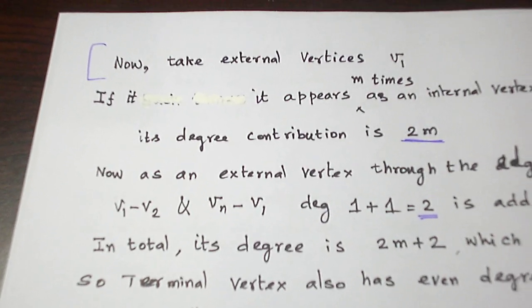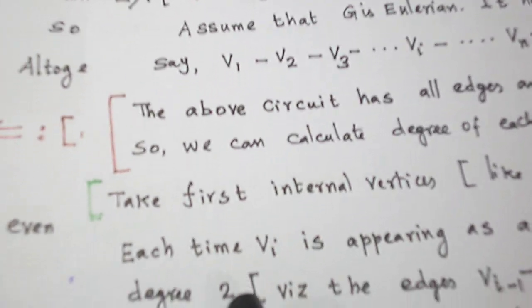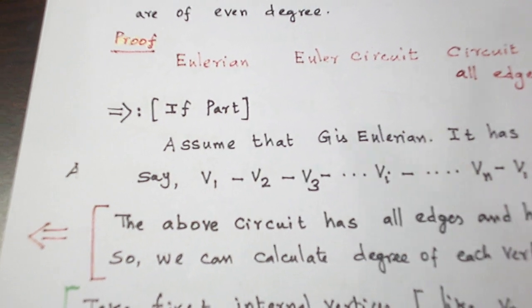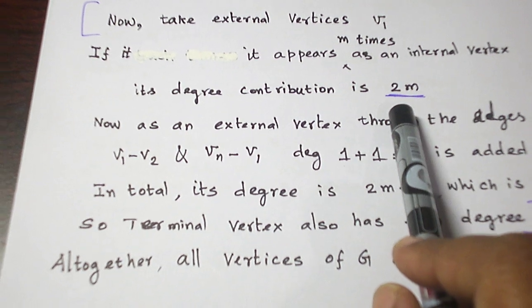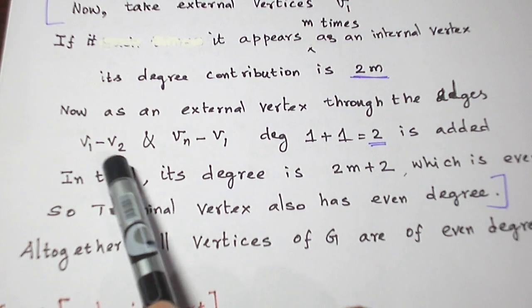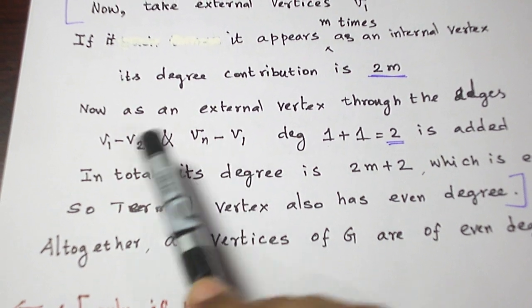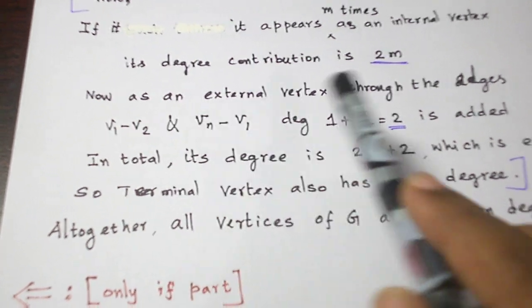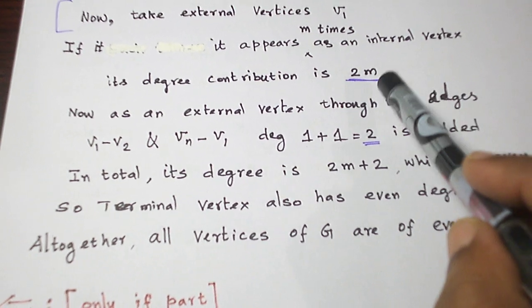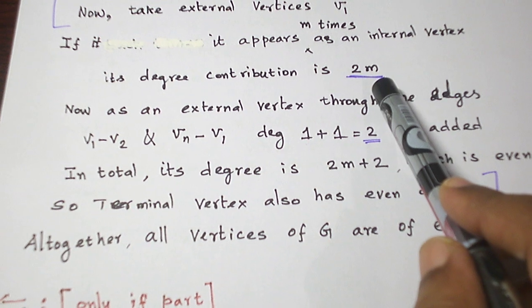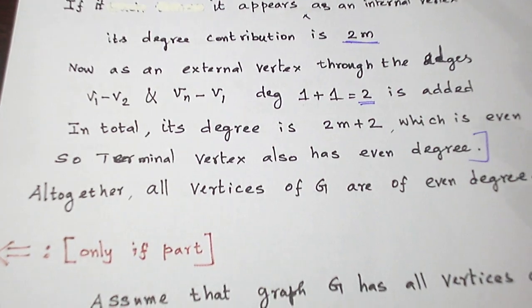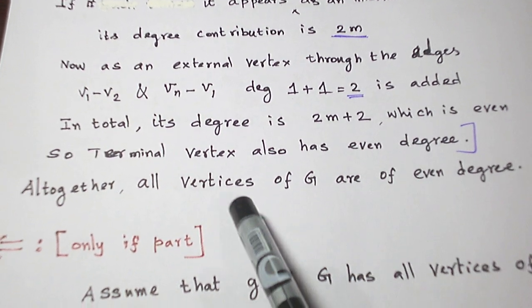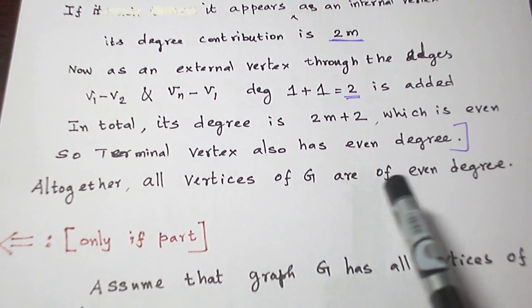So for the first category, all the internal vertices are of even degree. Now let us take the terminal vertex. The terminal vertex is V1. Now it may appear as an internal vertex already. So if it appears as an internal vertex m times, its degree is 2m, as argued earlier. Now the starting edge V1-V2 and ending edge Vn-V1 each contribute degree 1 to vertex V1. So degree 1 plus 1, that is degree 2, is added for the terminal vertex. So totally the terminal vertex has degree 2m plus 2, which is also even. So the terminal vertex also has even degree. Altogether, internal vertices have even degree and the terminal vertex also has even degree, so all the vertices are of even degree.